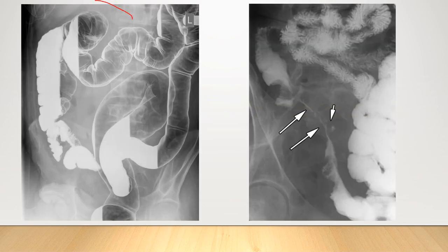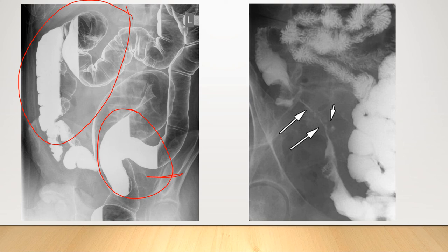The lead pipe rigidity seen in ulcerative colitis is due to complete loss of the haustra markings in the diseased segment of the colon, giving a smooth-walled cylindrical appearance. The string sign in Crohn's disease is due to incomplete filling of the intestinal lumen because of narrowing from stricture and fibrosis, leading to incomplete filling with barium and a string-like appearance.